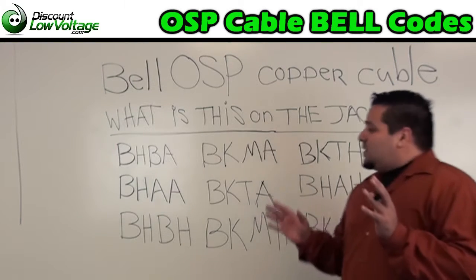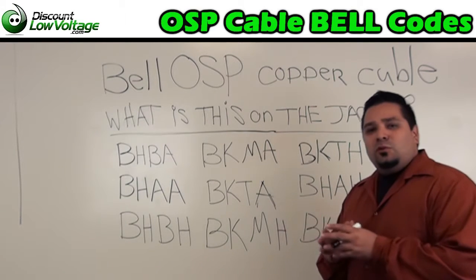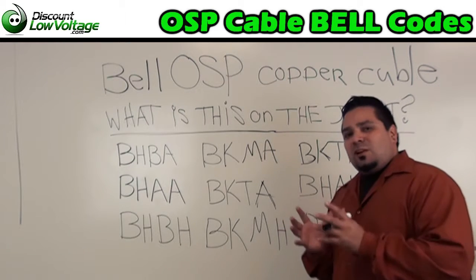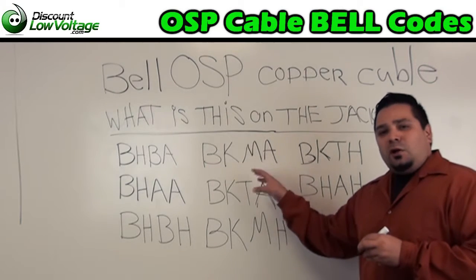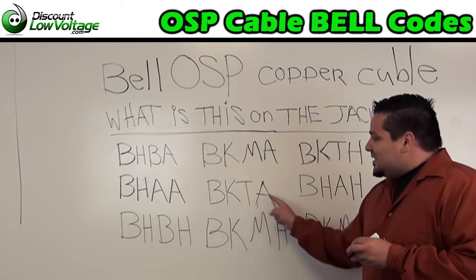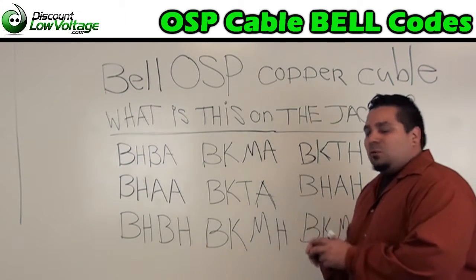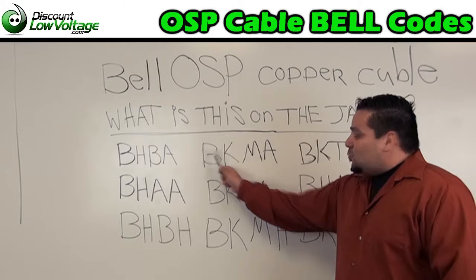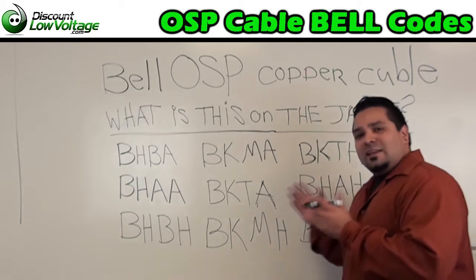There is certain print on the jacket of the cable that will tell you exactly what type of cable you're working with. Sometimes there's a part number and sometimes there's not. Sometimes it's easier to identify by the bell code. These are just a small handful of codes that you'll find on the jacket — BKMH, BKTA. There's quite a few of these, and what we're going to do is break down each letter by position: position one, position two, three, and four.